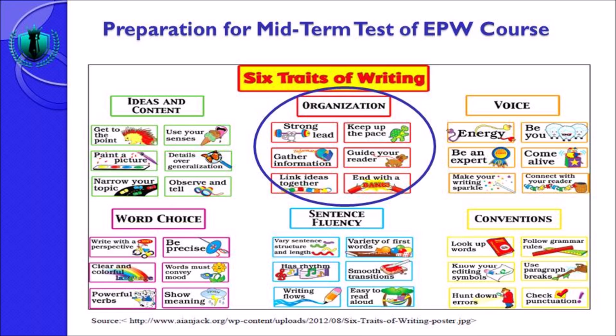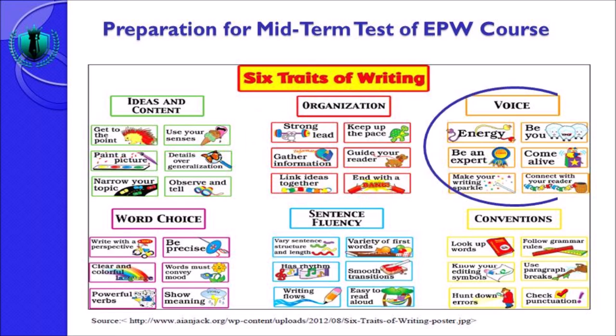The third trait of writing is known as voice. Voice actually means the inner thoughts that you have — if you have an idea, opinion, or argument, the voice comes within your mind. What do you actually have in your mind about the topic — that is called voice. There are six items related to voice: energy, be you, be an expert, come alive, make your writing sparkle, and connect with your reader.